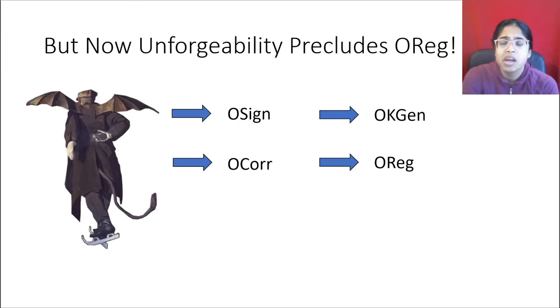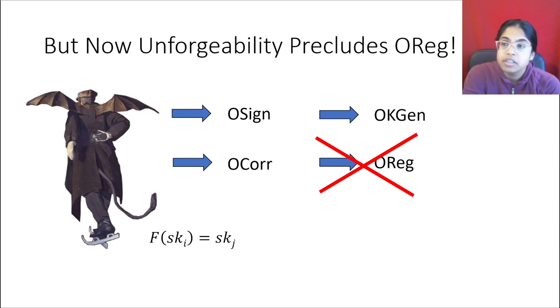But now we have a problem. Unforgeability can't be as strong as we would like it to be because a register is now trivially going to make it so an adversary can forge. Even though honestly generated keys will never have this relationship, if we allow the adversary to register his own keys, he can easily make it so that he picks two keys such that f of ski is equal to skj. And then he would be able to create as many signatures as he likes. So because of our insistence on being in the plane model and having logarithmic size ring signatures, we lost our ability to have a register.